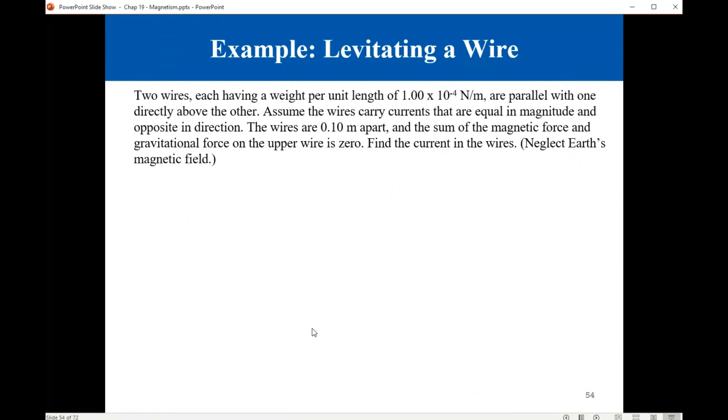Example: Two wires, each having a weight per unit length of 1×10⁻⁴ N/m, are parallel with one directly above the other. Assume the wires carry currents that are equal in magnitude and opposite in direction. The wires are 0.1 meters apart, and the sum of the magnetic force and gravitational force on the upper wire is zero.